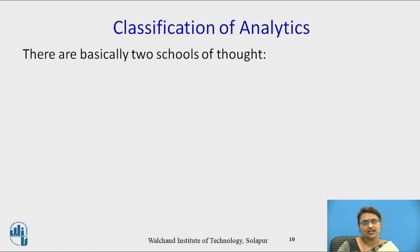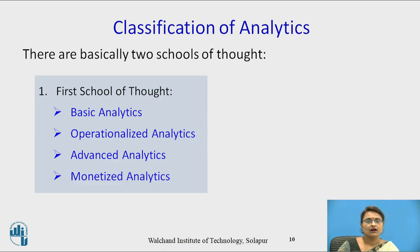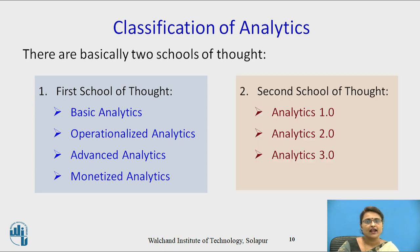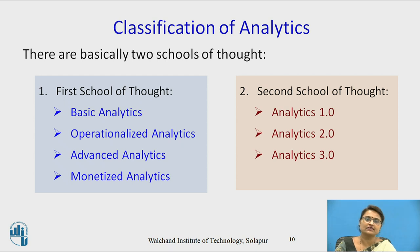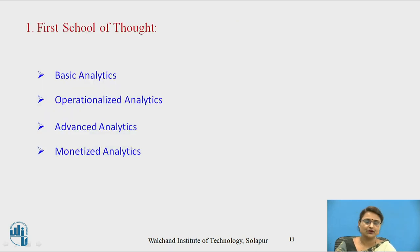Talking about the classification of analytics, there are basically two schools of thought. The first one covers basic analytics, operationalized analytics, advanced analytics, and monetized analytics. The second one covers analytics 1.0, 2.0, and 3.0. Let us see these one by one.